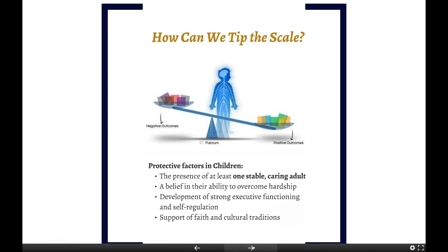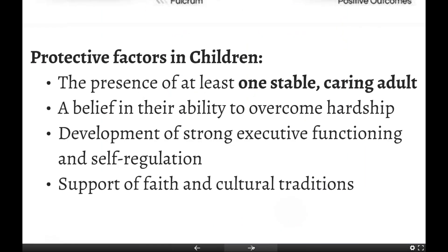Sheryl Sandberg, COO of Facebook and coauthor of Option B, talks about resilience as a muscle you can build. The Center for the Developing Child has identified universally evidence-based protective factors in children that support building resilience: the presence of at least one stable, caring adult — which could be a parent, a teacher, or another caregiver; a belief in the ability to overcome hardship; the development of strong executive functioning and self-regulation; and the support of faith and cultural traditions. We also want to reframe from 'what's wrong with you' to 'what's right with you' — what are those protective factors that can transform toxic stress into tolerable stress?